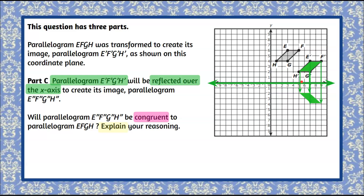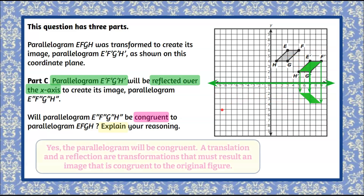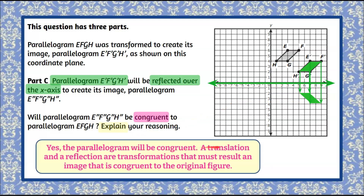And there we have it reflected over the x-axis — that's our figure E''F''G''H''. Now let's talk about congruency. We went from the original figure, we translated, and then we reflected. And yes, they are all congruent. A translation and a reflection are transformations that must result in an image that is congruent to the original figure. You wouldn't even need to show your work on the coordinate plane, because reflections, rotations, and translations must all result in congruent images.